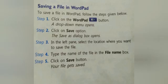As soon as you click on the save option, the Save As dialog box opens. Step 3: In the left pane, select the location where you want to save the file, as shown in the picture. Step 4: Type the name of the file in the file name box. Step 5: Click on the save button and your file gets saved. This is how you can save a file in WordPad.